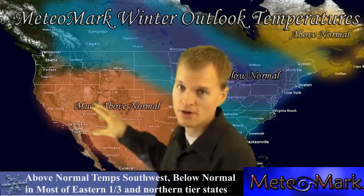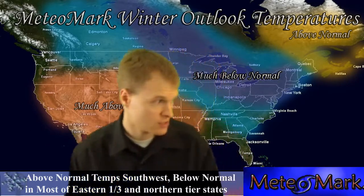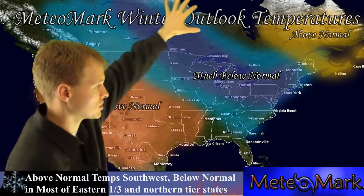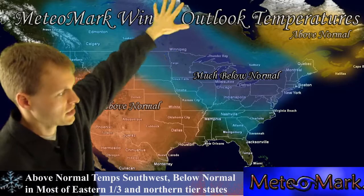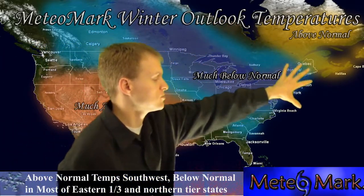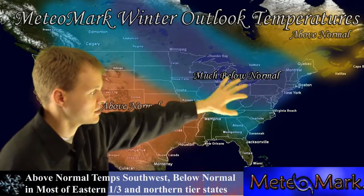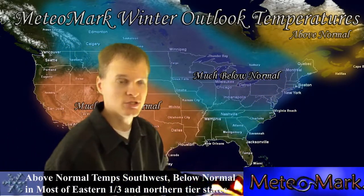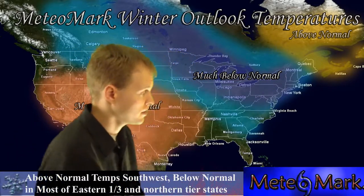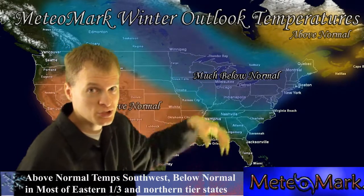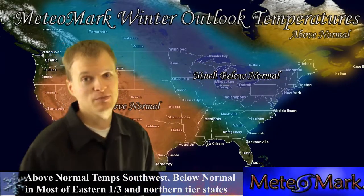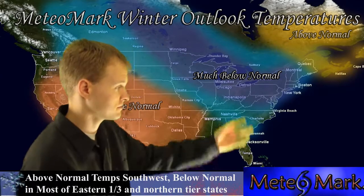Warm temperatures out here out west and in some of the southern states, and characterized by a much cooler air mass from British Columbia, Alberta, Manitoba, all the way down through the Great Lakes here in the northeast, and extending down towards some of the southern states like the Carolinas and just north of Florida. This will be characterized by much below normal. And I want to make note: just because you have below normal temperatures does not mean you're going to see above normal snowfall.